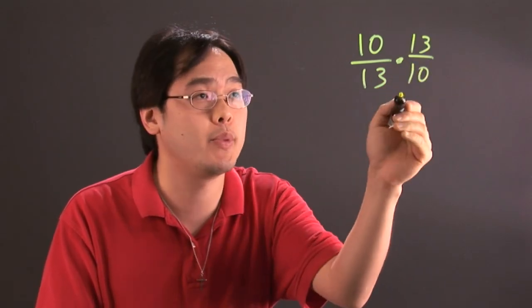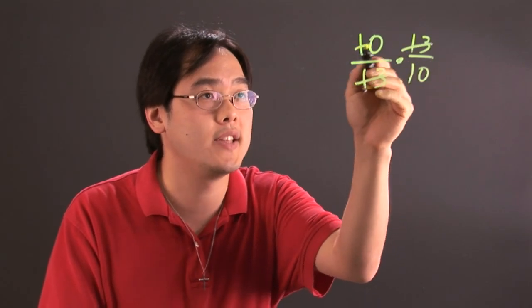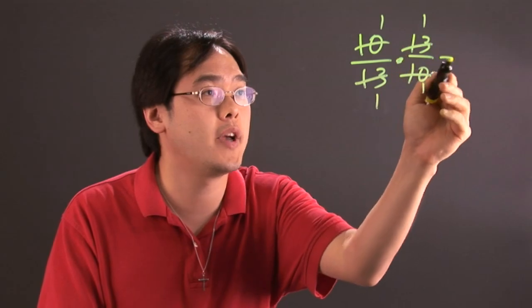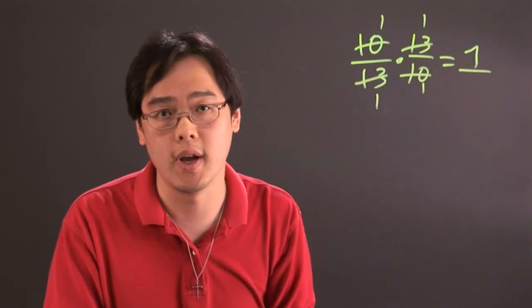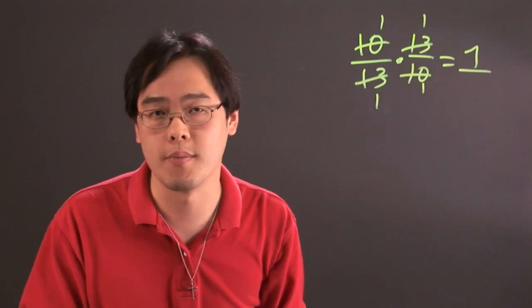Now what happens here is when you multiply fractions, the 13ths here cancel and the 10ths cancel and you're left with a 1 all over the place. So when you multiply all across you're going to end up with the number 1. So in this case, 10/13 times its reciprocal 13/10 gives you the number 1.